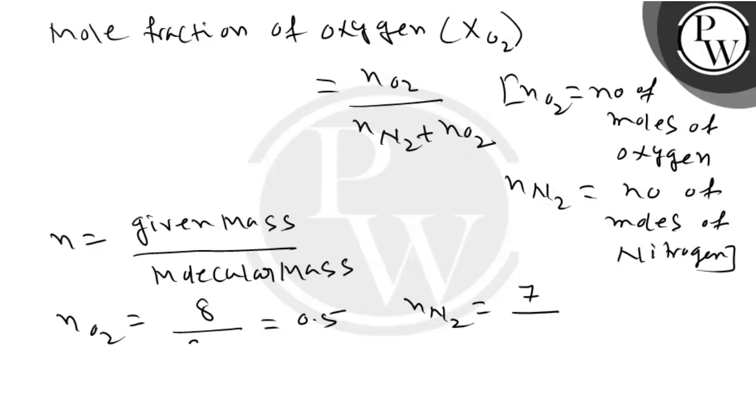So it will be 8 divided by 32, which equals 0.25. And in case of n(N2): 7 divided by 28, which is also 0.25.